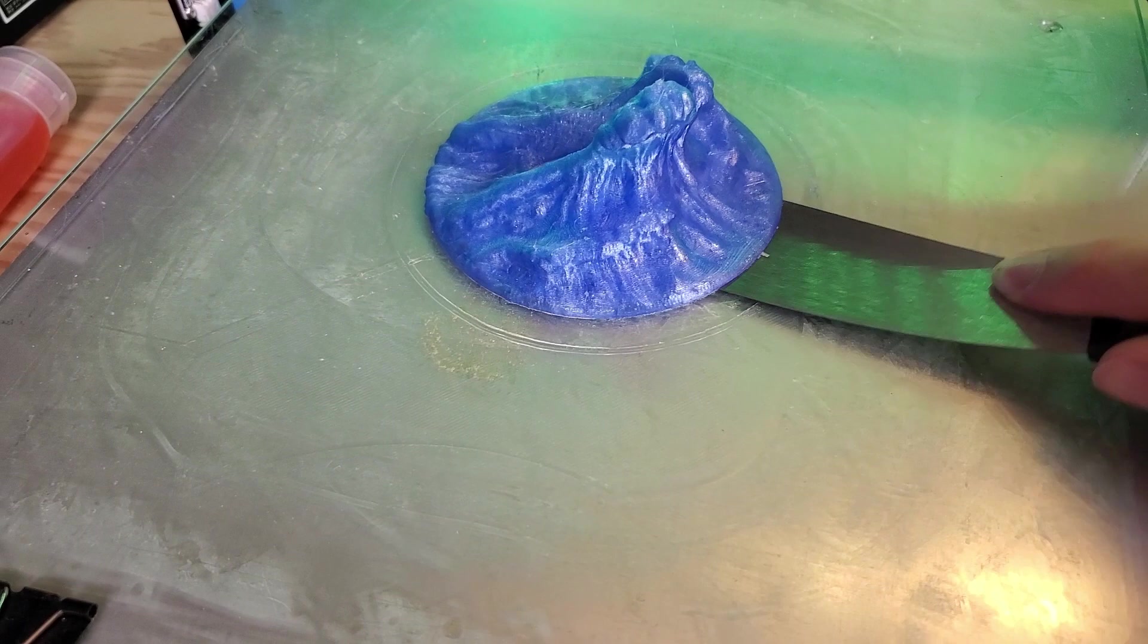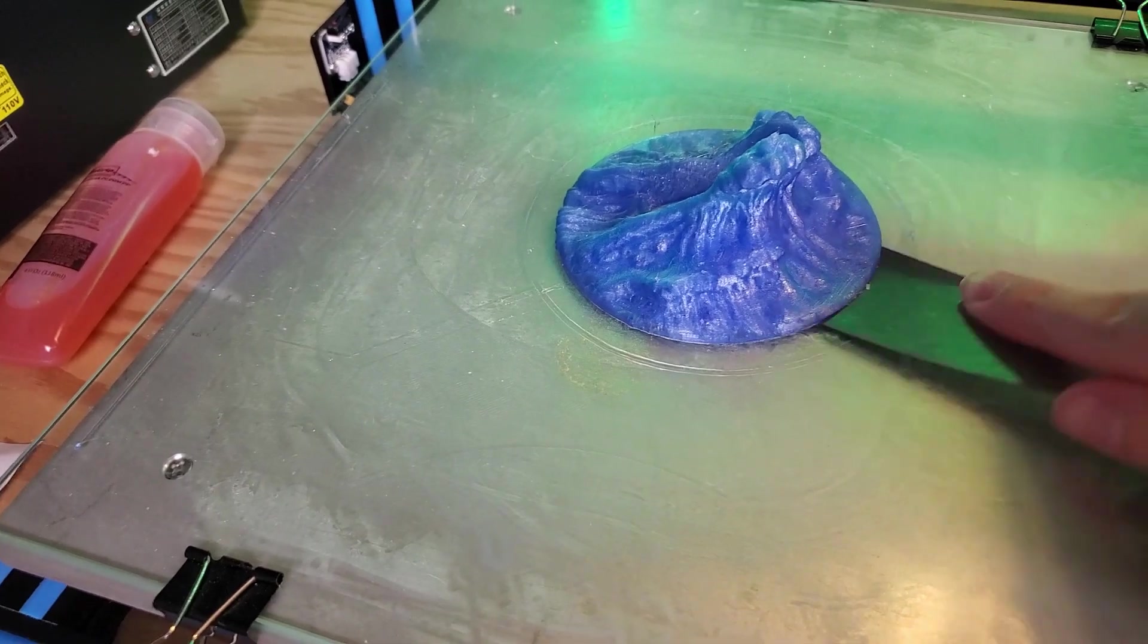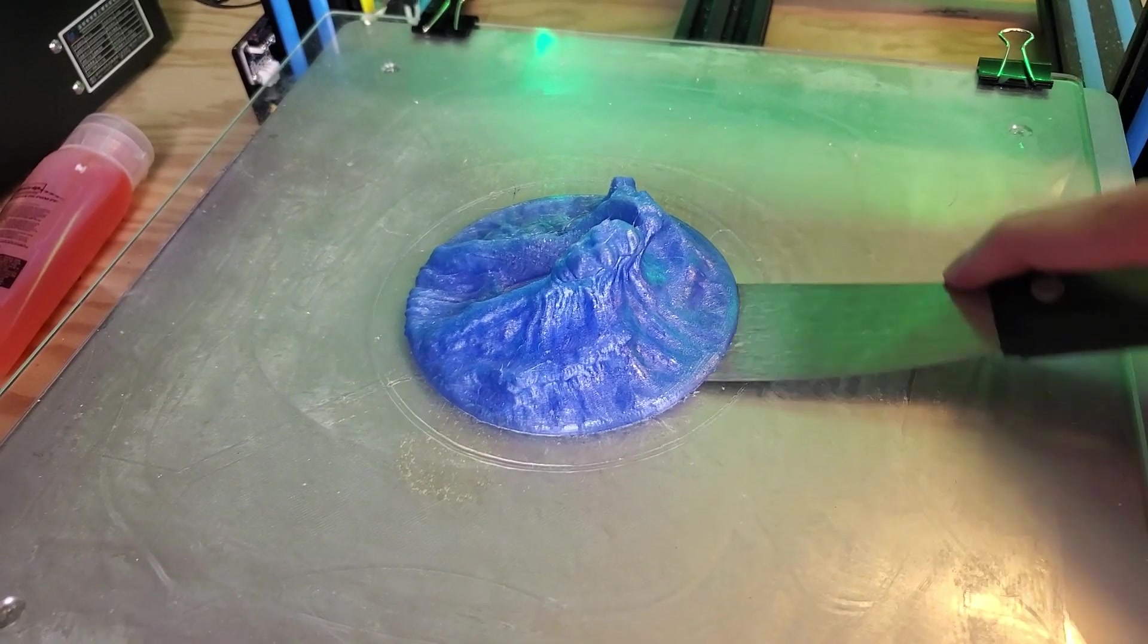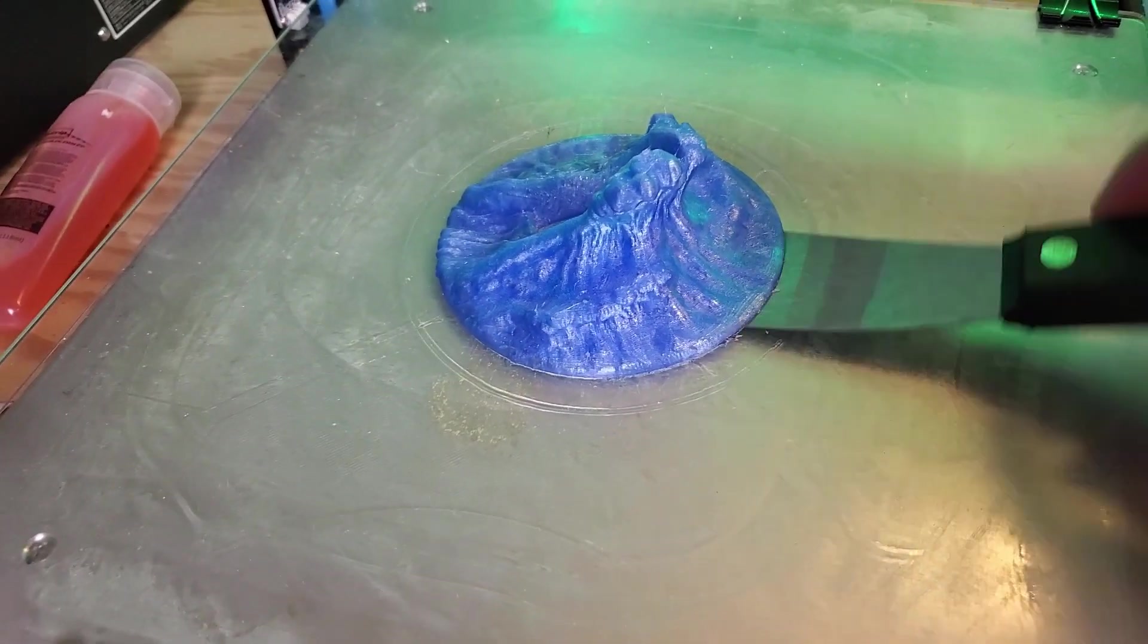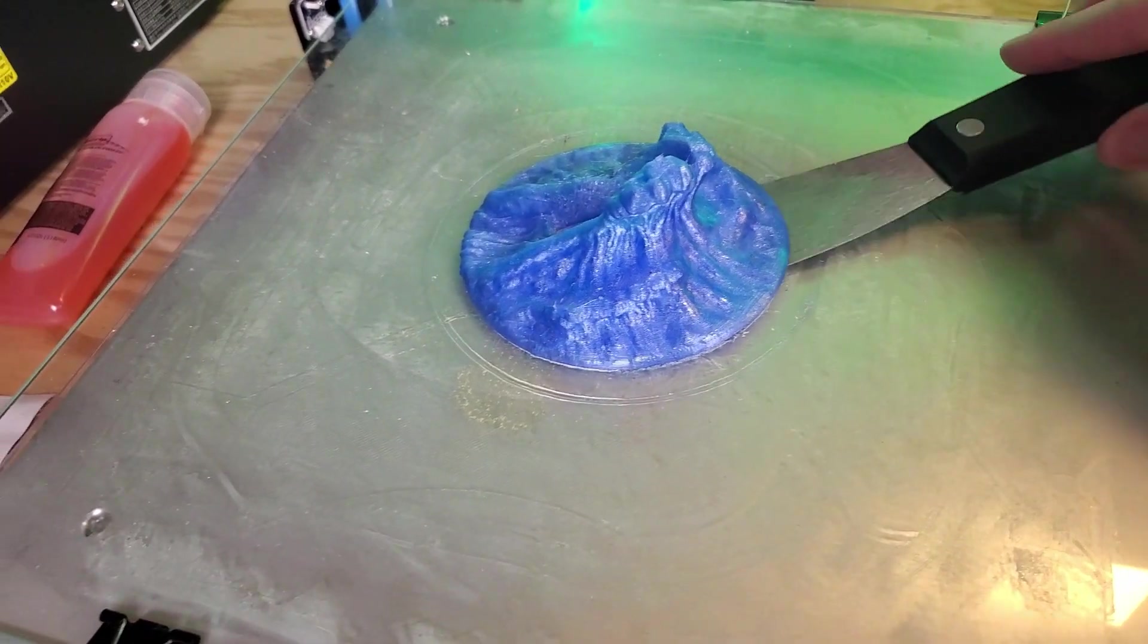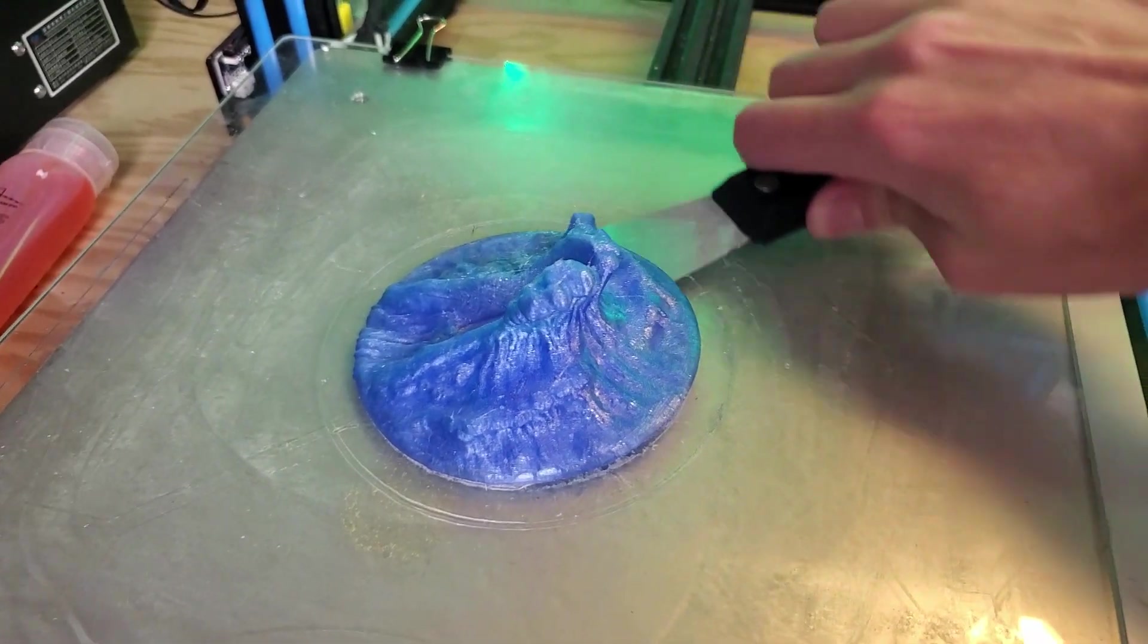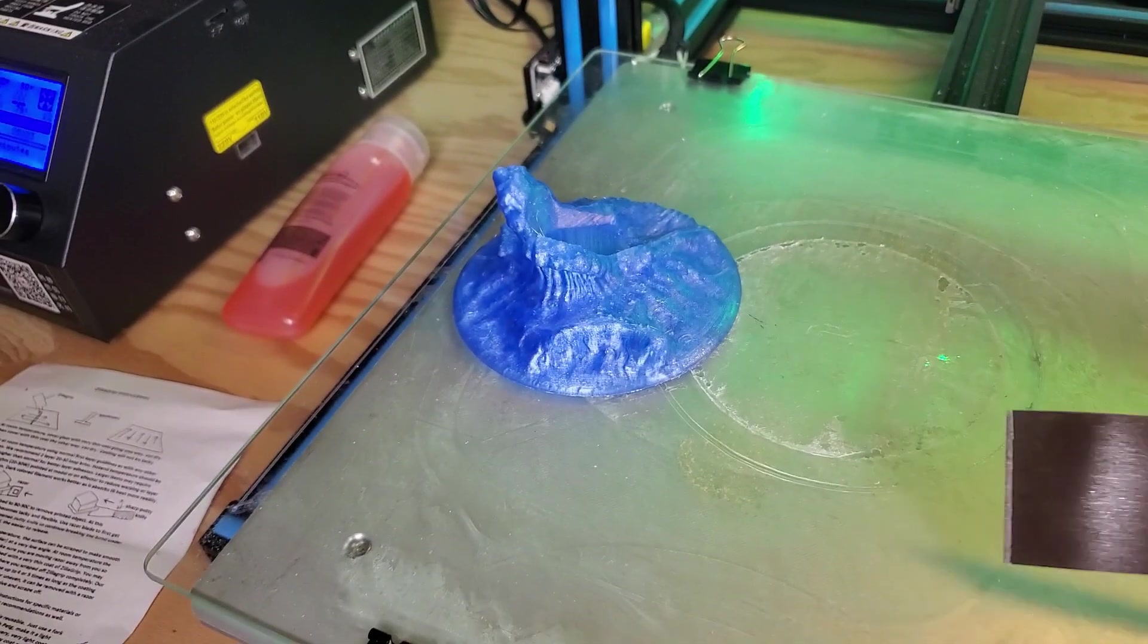I got the spatula to stick under one of the corners, slowly getting the spatula underneath. I do feel that the material is actually popping the part off. It's not popping off by itself, but I can feel that the material is releasing from the glass bed. This is sticking super well, so it did do its job and stuck the part to the bed. And there we go, look at that.